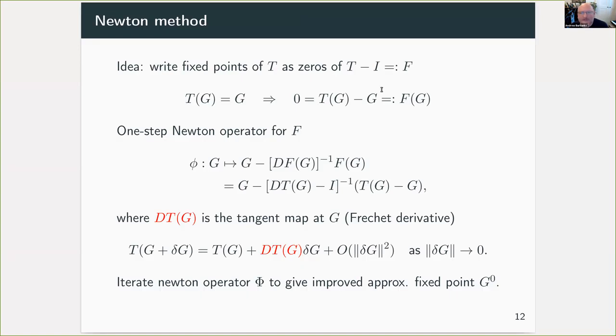The question then is how we can improve it to get a good approximate fixed point. The idea here is to adapt the ideas of Newton's method from finite dimensional calculus to our Banach space. So we write down the fixed point problem as a zero finding problem for an operator that's T minus identity. Then we can write down one step Newton operator in terms of our function G. In here, DTG is the tangent map, the Fréchet derivative of the renormalization operator at G. In other words, it's the linear part of this operator. The idea then is we iterate this Newton method in the space of polynomials of fixed degree to find a good approximate fixed point that I'm going to call G zero.